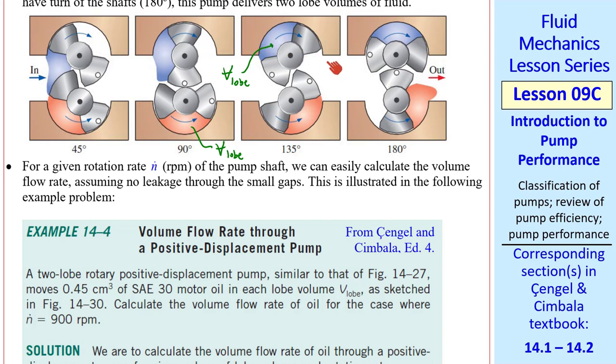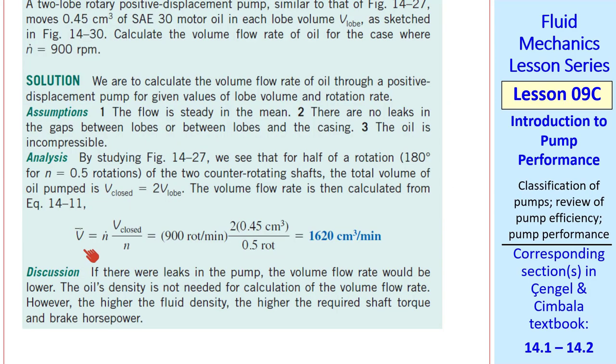So a volume of 2 V lobe is pushed out in half a rotation. Once we figure that out, the volume flow rate is n dot, what we call V closed, 2 lobe volumes, over the number of rotations.